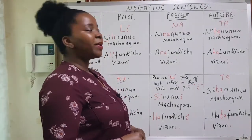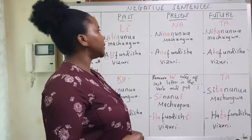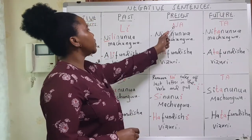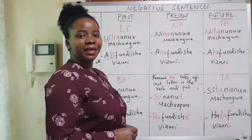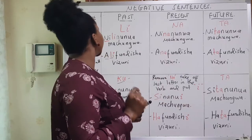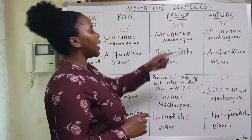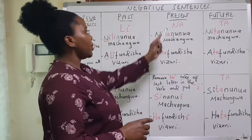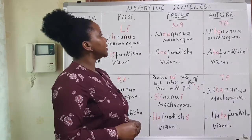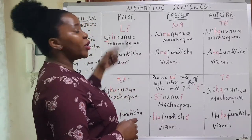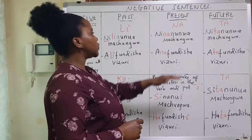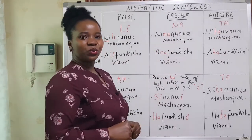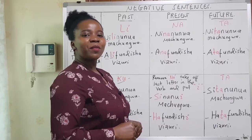The next part is present tense. To make a present tense sentence we use na, which stands to represent the present tense in the positive form. For example, ninanunua machungwa means 'I am buying some oranges.'